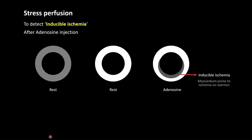One of the main applications of perfusion is to detect inducible ischemia through stress perfusion. At rest, the entire myocardium is enhancing, so without stress we might think the myocardium is normal. But when we induce stress by injecting adenosine and then perform perfusion, a non-enhancing region appears. This non-enhancing area that appears after inducing stress is called inducible ischemia — myocardium that is prone to infarct if there is significant exertion.